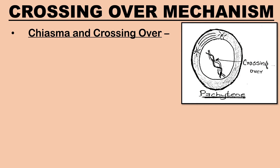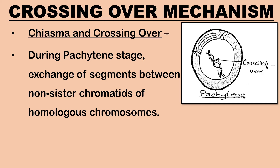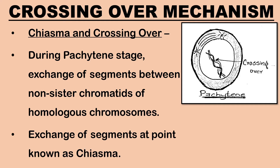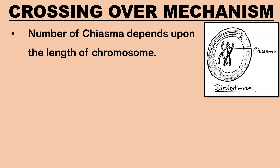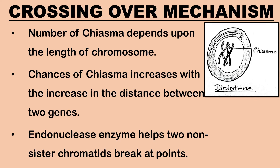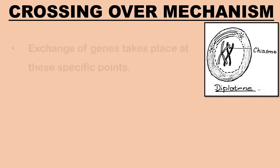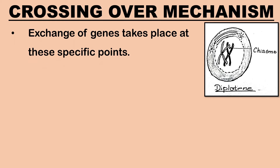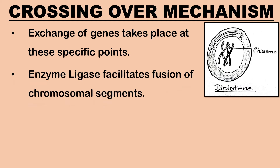During the pachytene stage of prophase one, exchange of segments between non-sister chromatids of homologous chromosomes takes place. The point of exchange of segments is called chiasma. The number of chiasma formed depends on the length of the chromosome — if the distance between two genes on a chromosome is more, the chances for a chiasma to occur between them increases. The two non-sister chromatids break at corresponding points with the help of enzyme endonuclease, and exchange of genes between the two non-sister chromatids of a tetrad takes place.